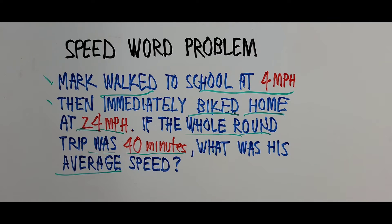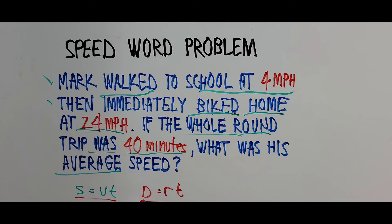Let's get down to the formula. Since this is a speed problem, the formula for speed is: distance equals velocity times time, or distance equals rate times time. S stands for distance, V stands for speed, T stands for time — equivalently D equals R times T. Since we're looking for average speed and we have walking and biking, we cannot just average both speeds: 4 plus 24 divided by 2 won't work.